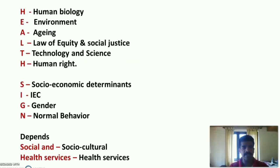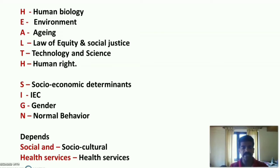H stands for human biology. E stands for environment. A stands for aging. L stands for law of equity and social justice. T stands for technology and science. H stands for human right. S stands for socio-economic determinants. I stands for information, education, and communication — that is IEC. G stands for gender. N stands for normal behavior. Social stands for socio-cultural. Health services stands for health services.